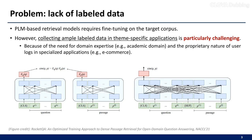Recently, PLM-based retrieval has demonstrated impressive accuracy. However, employing such PLM-based retrieval models necessitates fine-tuning on the target corpus. Nonetheless, gathering sufficient labeled data in theme-specific applications poses a significant challenge, given the requirement for domain expertise and the proprietary nature of user logs in specialized applications. Consequently, PLM-based retrieval models frequently encounter difficulties in accurately capturing relevance in theme-specific applications.